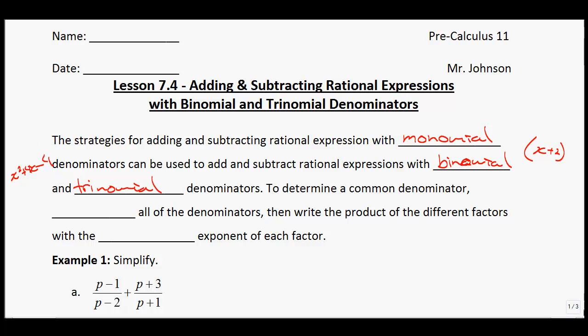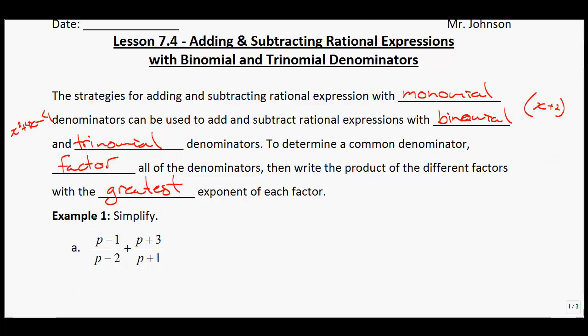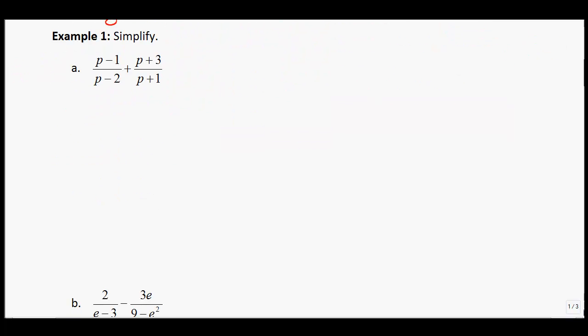To determine a common denominator, you need to factor all of the denominators. Then write the product of the different factors with the greatest exponent of each factor. Let's take a look at some examples. Like many of them, we're going to just learn through doing these examples.